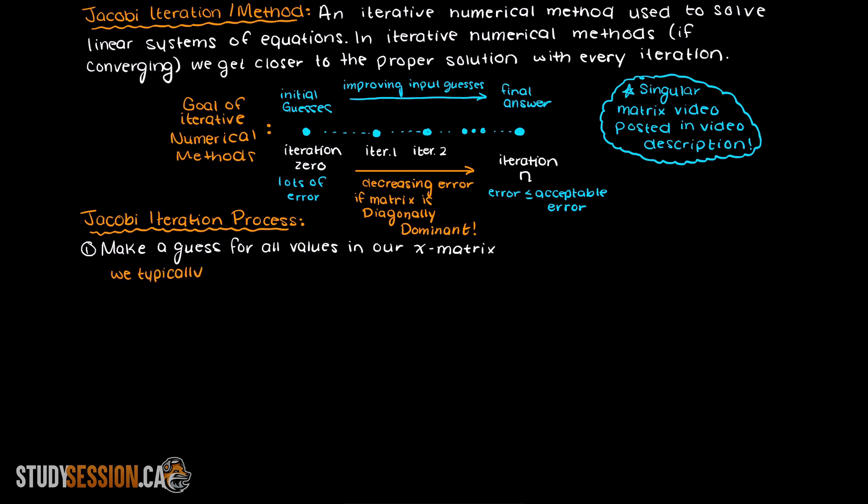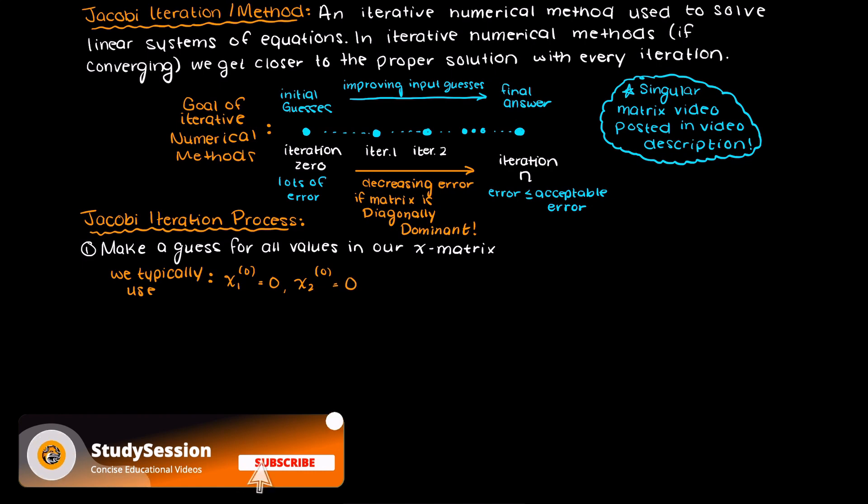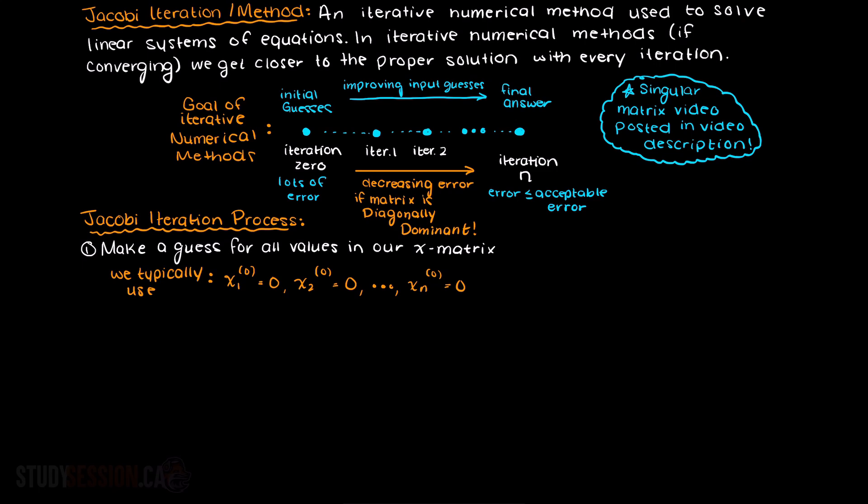Firstly, we make a guess for every value in your x matrix, therefore we need to assume a value for x1, x2, x3, etc. for as many x values as you have.